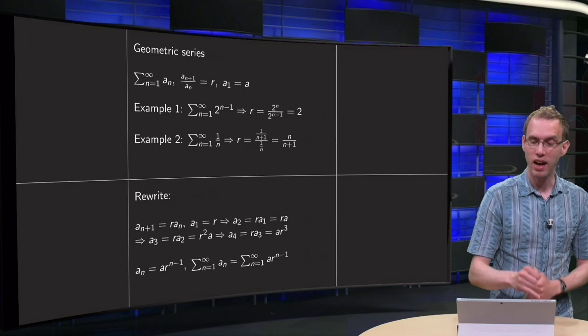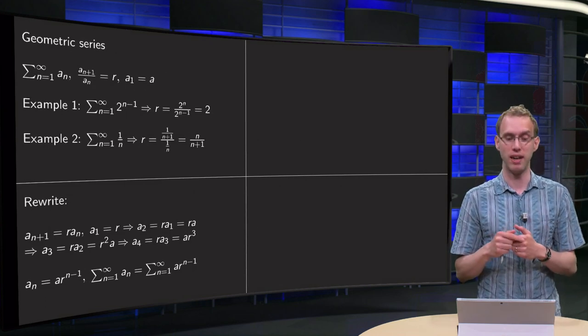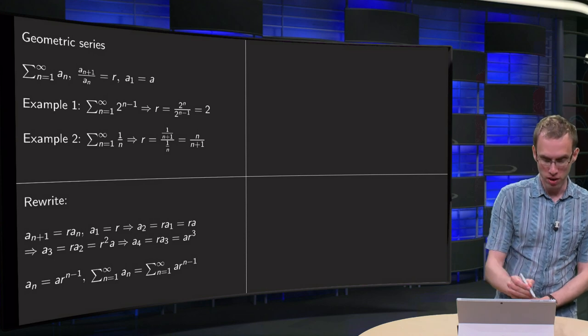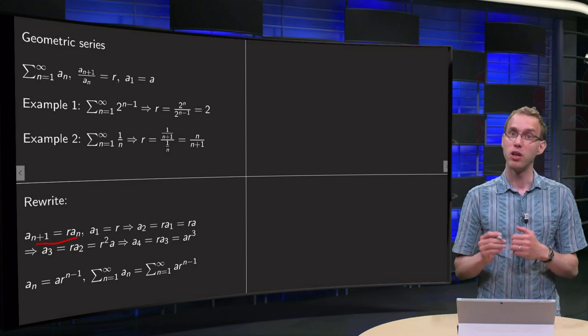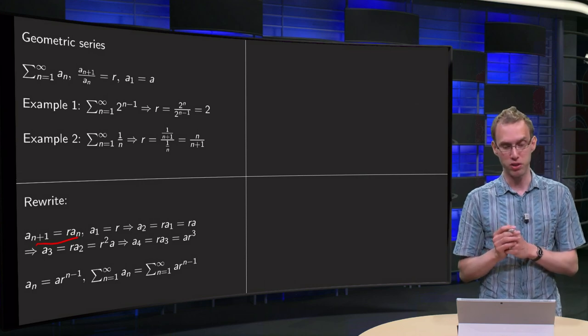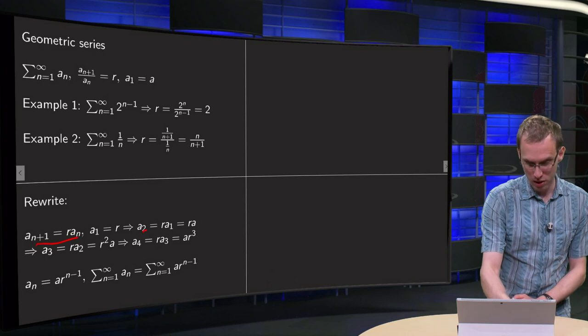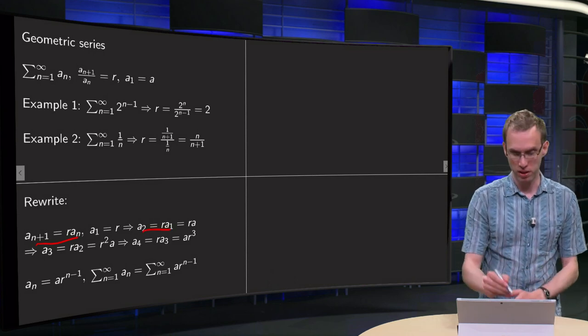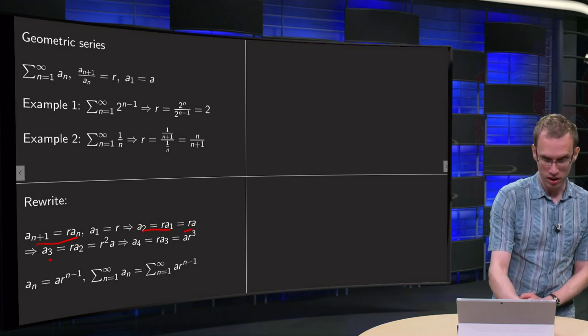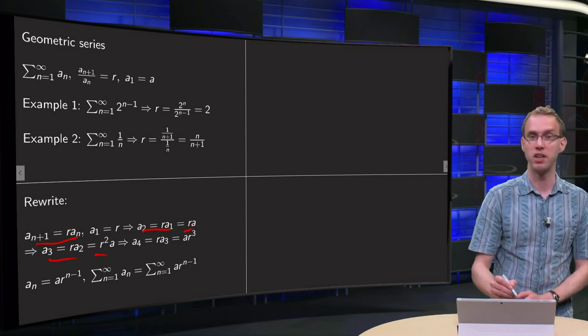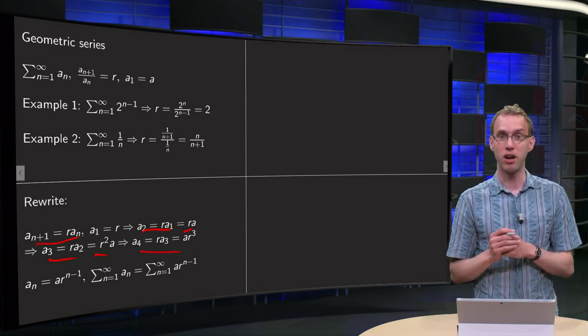Let us rewrite this geometric series a bit in order to be able to compute its sum later on. We know that a_{n+1} equals r times a_n, so if we start with the first term a_1 equals a, then a_2 equals r times a_1 equals r times a, and then a_3 equals r times a_2 equals r squared times a, and a_4 equals r times a_3 equals a times r cubed.